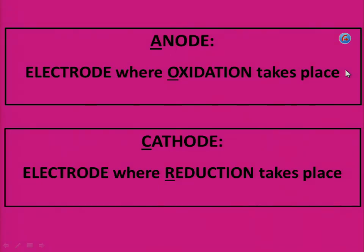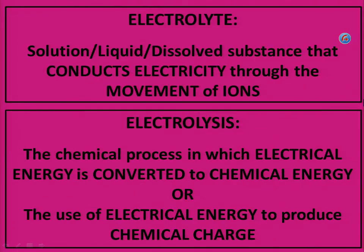Anode: the electrode where oxidation takes place. Note that anode and oxidation both start with a vowel. Cathode and reduction both start with a non-vowel letter. Electrolyte: a solution, liquid, or dissolved substance that conducts electricity through the movement of ions. Electrolysis: the chemical process in which electrical energy is converted to chemical energy, or the use of electrical energy to produce chemical change.